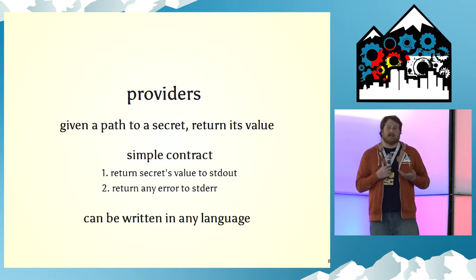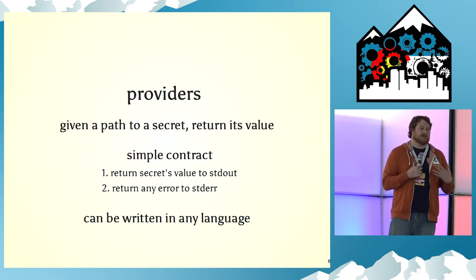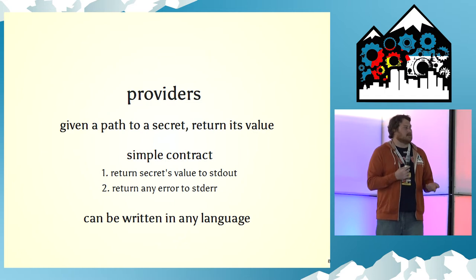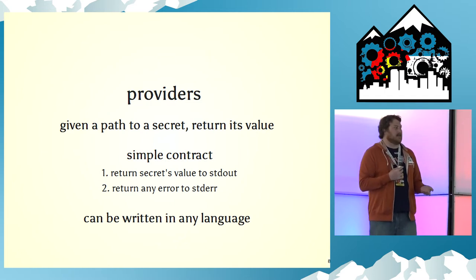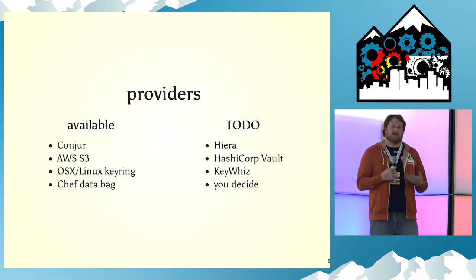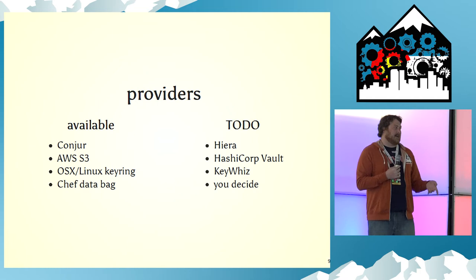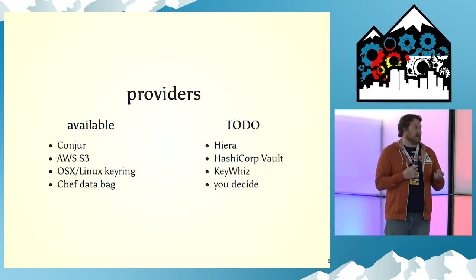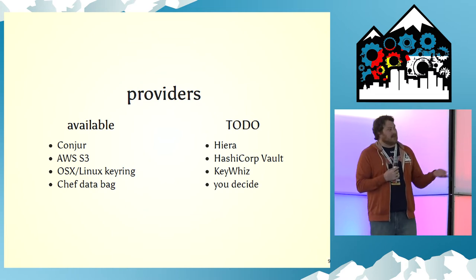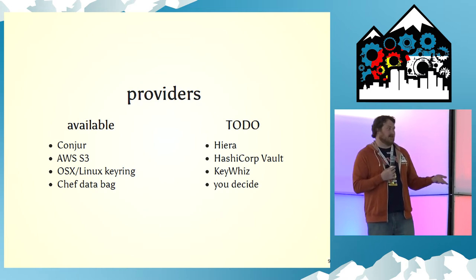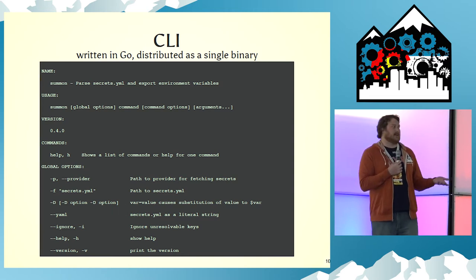An important part of Summon is that it has pluggable providers, so you're not locked into any certain secret store. If you want to use Vault, you can use the Vault provider. If you want to use Conjure, you can use the Conjure provider. The contract is really simple and it's easy to write providers. Providers available already include Conjure, AWS S3, OSX/Linux Keyring, and Chef data bags. Future ideas include Hyra, HashiCorp Vault, and KeyWiz — or you can write one for your own internal system.